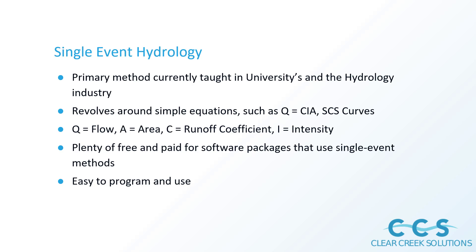Let's talk about some background on single event hydrology. This is the primary method that's going to be taught in universities. Single event hydrology uses more simplistic equations. You've probably seen equations like Q equals CIA, SCS curves, and other ways of calculating volume. Q equals flow, A equals area — usually an acreage — C is the runoff coefficient, and I is the intensity of the rainfall. This is sort of the building block equation used in single event hydrology.